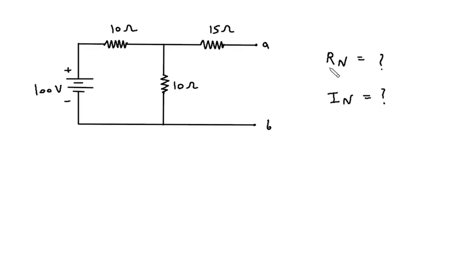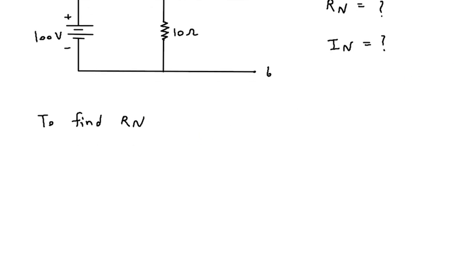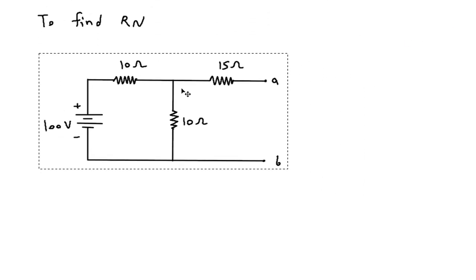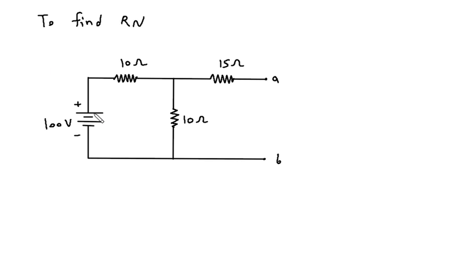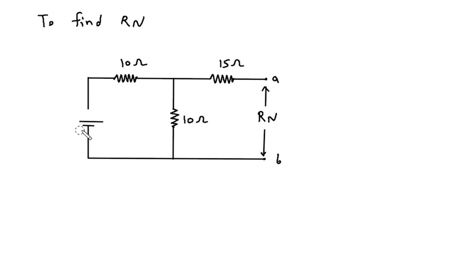First we will find Rn. To find Rn, we have to short circuit the voltage source and open circuit the current source, and this will be our Rn. Here this is a voltage source, so we have to short circuit this.